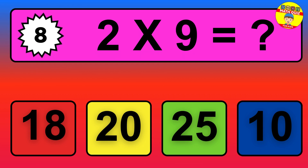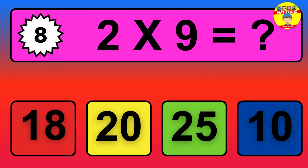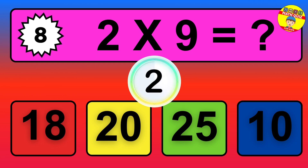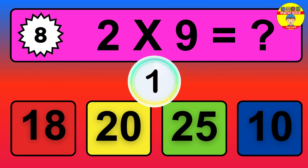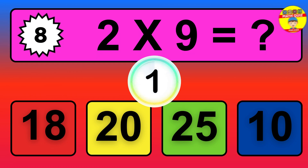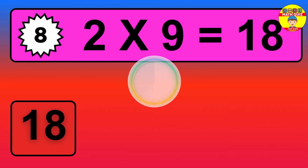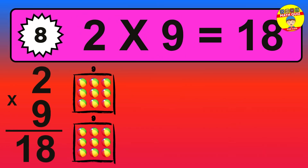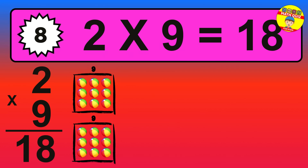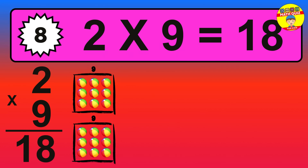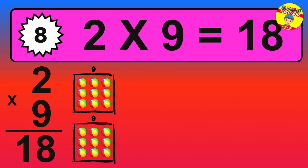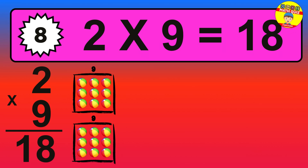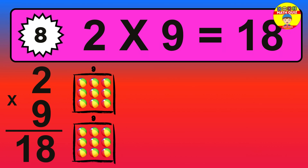Question eight: two times nine equals what? The answer is two times nine is eighteen. To calculate, we have two groups with nine balls each one. So how many balls do we have? Eighteen balls.